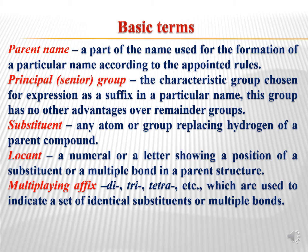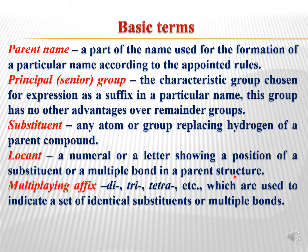Before learning the rules for nomenclature, we should know certain basic terms. The first term is parent name — it is a part of the name used for the formation of a particular name according to the appointed rules. Second is principal group — it is the characteristic group chosen for expression as a suffix in a particular name, and this group has no other advantage over the remainder groups. Next is substituent — any atom or group replacing hydrogen of a parent compound. And locant — a numeral or a letter showing the position of a substituent, functional group, or a multiple bond in a parent structure.